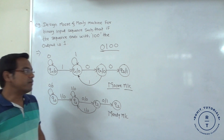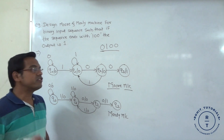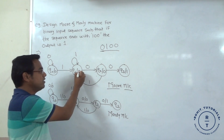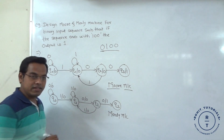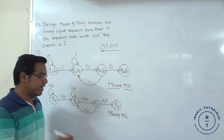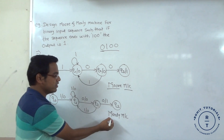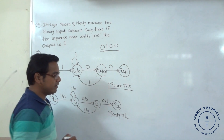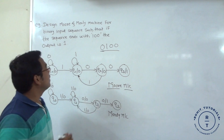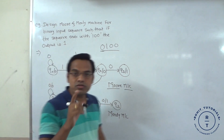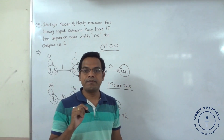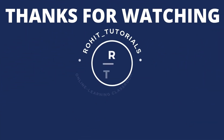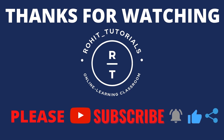When we consider the Moore machine, the output is represented with the state, whereas in the Mealy machine the output is represented with the input. I hope you understood this problem. Thank you.